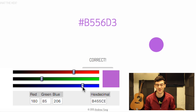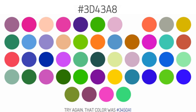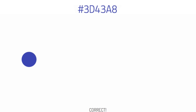Let's do one more. For 3D43A8: 3D is about 20% red, 43 is about 25% green, and A8 is about 60% blue. So this is going to be mostly blue, close to black. I guessed one color, but got it wrong — though look how close that color was. We had 3D43A8 and the answer was 3450A1. I'm still pretty happy with that. My other guesses are the one on the bottom right or the one diagonal from bottom left to top right — I'll click that one. Yeah, there we go.